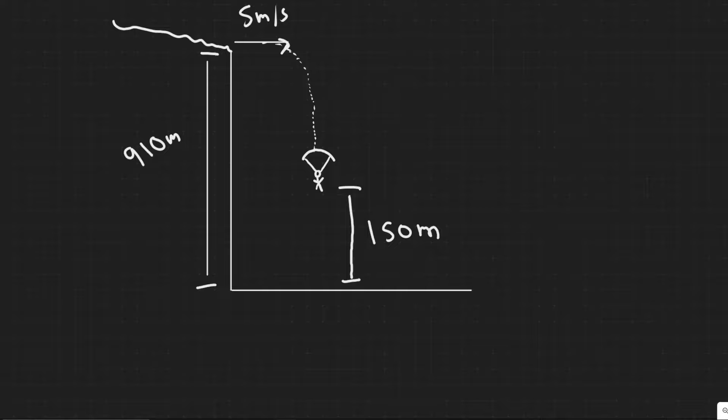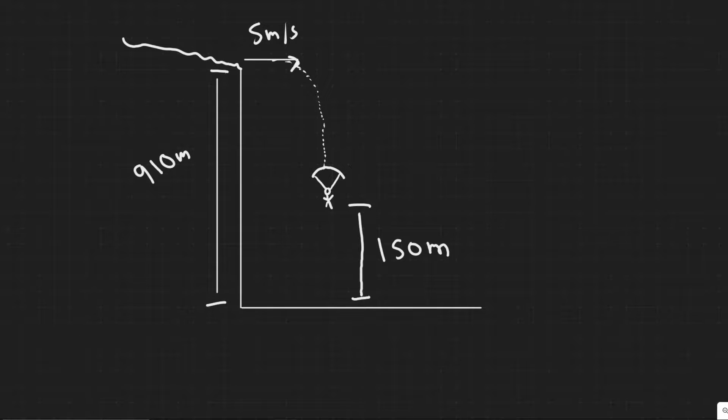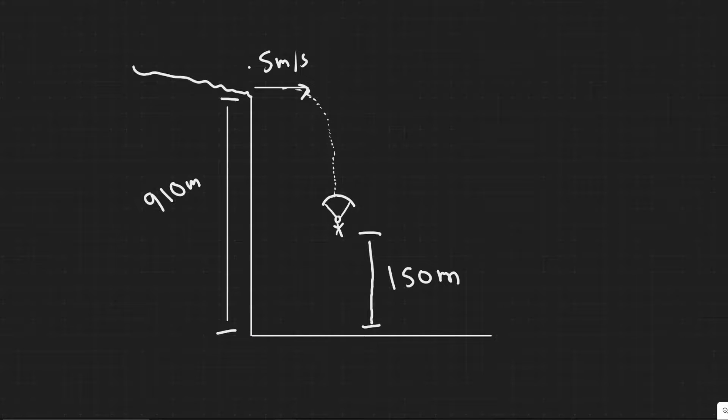First thing, you want to draw what's going on and understand it. We have this jumper. They're going to jump with a velocity of 5 meters per second horizontally. And then they're going to fall something like this. And at this point, 150 meters above, they're going to open their parachute. We know they're also 910 meters above the ground when they jump.